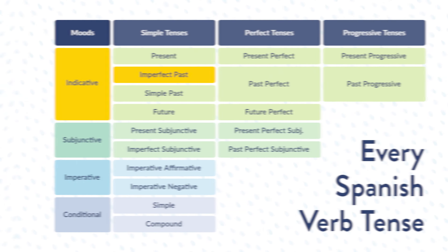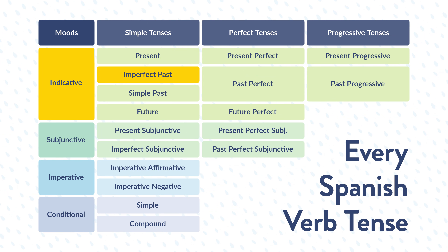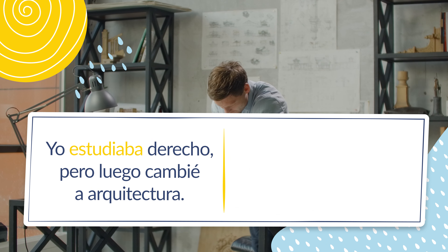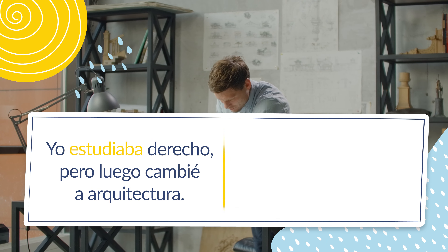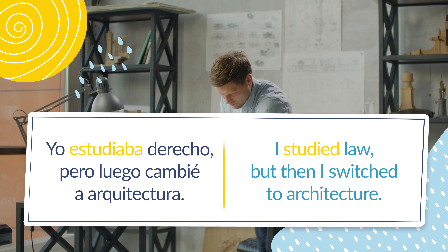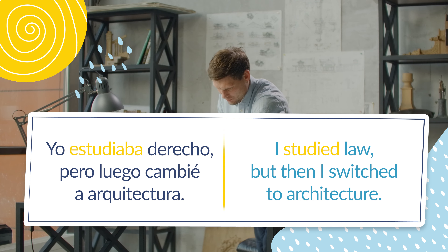Next up in the category of simple tenses within the indicative mood, we've got the imperfect past tense. You can use this one to talk about past actions, things that were habitual in the past, actions that were not completed in the past, or characteristics and emotional states that took place in the past. Yo estudiaba derecho, pero luego cambié a arquitectura — I studied law, but then I switched to architecture — would be an example of the imperfect past tense.